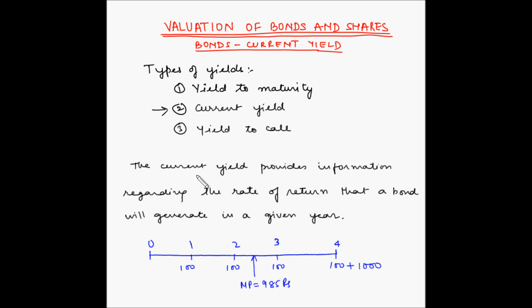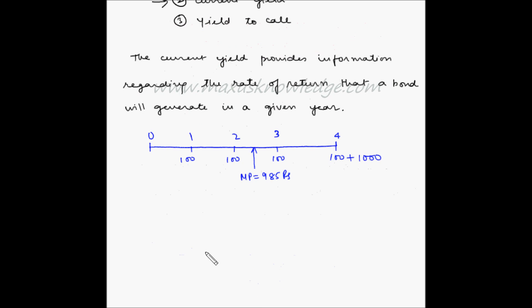As per the definition of Current Yield, Current Yield gives the information regarding the rate of return that a bond will generate in a given year. So in one year, in the third year, how much is the return that the investor is getting? It is 100 rupees and the investment is 985 rupees.